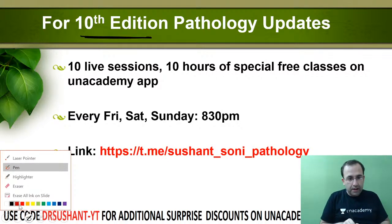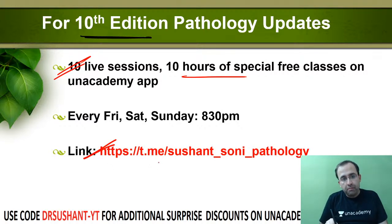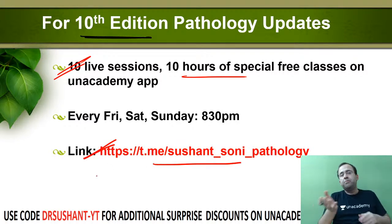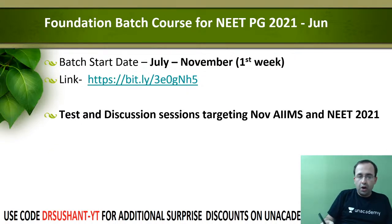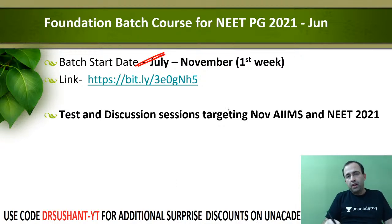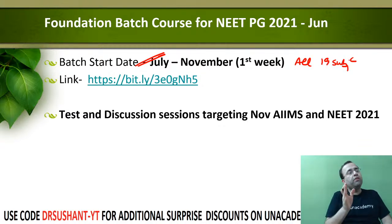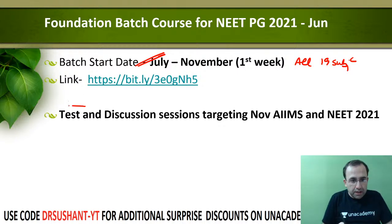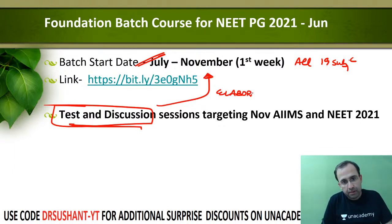For the 10th edition of Robbins, there are major updates. I have launched 10 live sessions (10 hours), completely free on the Academy app. For scheduling, check my Telegram group — search 'Sushant Sony Pathology' on Telegram. The test and discussion session is the best approach; for any topic you go wrong on, elaborate from the batch course.